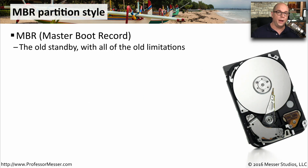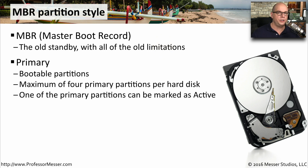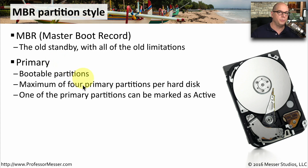There are two main ways to partition a drive. One way is to use an MBR partition. This stands for Master Boot Record, and this is the way we've been partitioning our drives for many years. There are two partition types on the MBR partition style. The first is the primary partition, which is a partition that's bootable, and you can have up to four primary partitions per drive. This is commonly where you would put a computer's operating system so that you can boot when the system starts up.